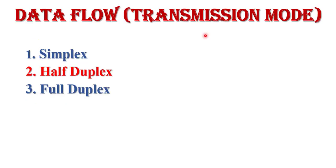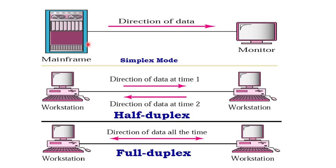Next is data flow or transmission mode. Transmission mode defines how devices can communicate with each other, or how a device can transfer data between sender and receiver. It is also known as directional mode, because the transmission mode defines the direction of data flow between sender and receiver. There are three types of transmission mode: first is simplex, second is half duplex, and third is full duplex.